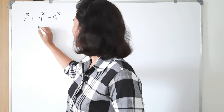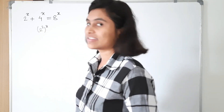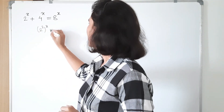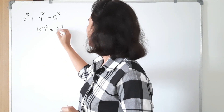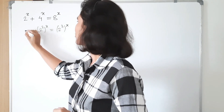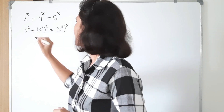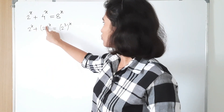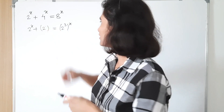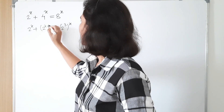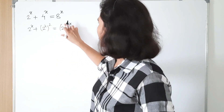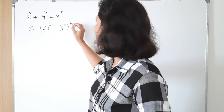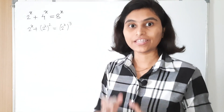And 8 raised to x as 2 cubed raised to x, and 2 raised to x stays as it is. So we can write 2 raised to x, then 2 raised to x squared, and similarly 2 raised to x cubed.